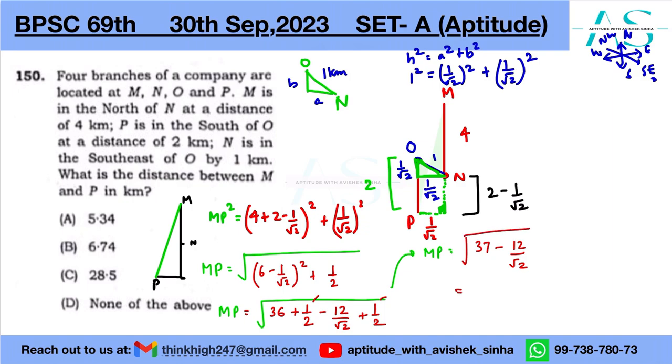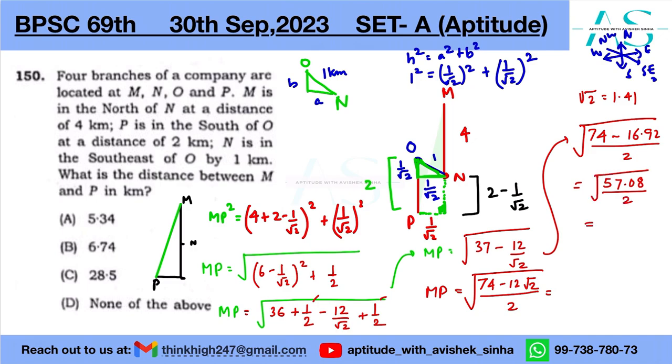And we can call it, if I multiply root two by root two in the denominator, we can write it as 74 minus 12 root two upon two, root under. Now root two is 1.41, we get this value as 74 minus 12 into 1.41 is 16.92 upon two. So this is 57.08 by two, which is 28.54 root under and that is equivalent to 5.34 kilometers,